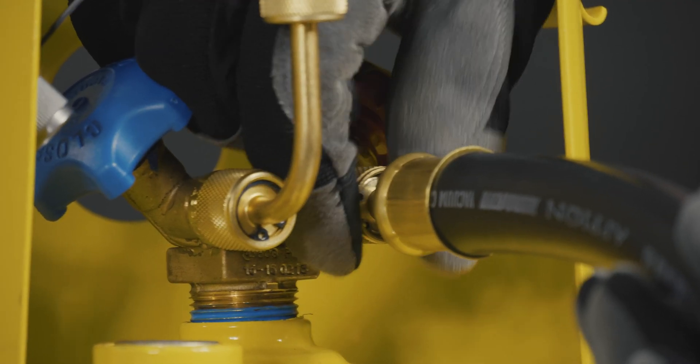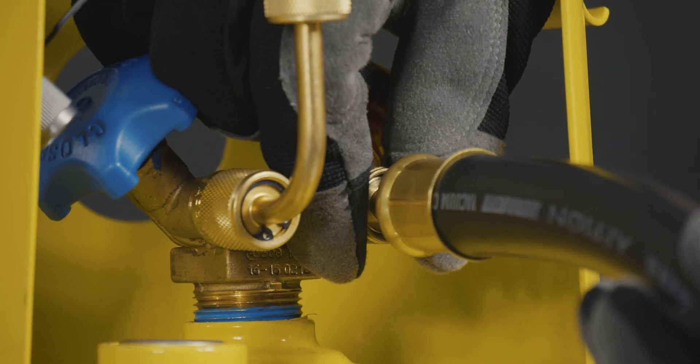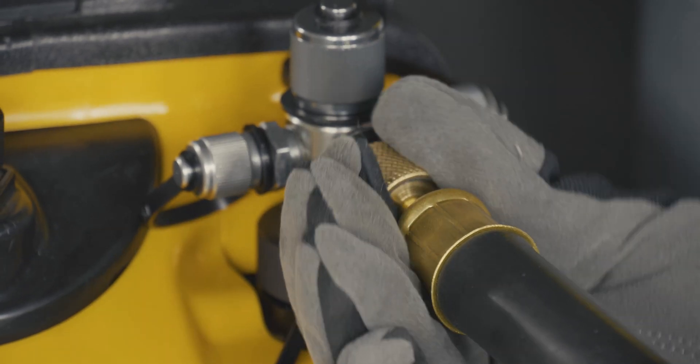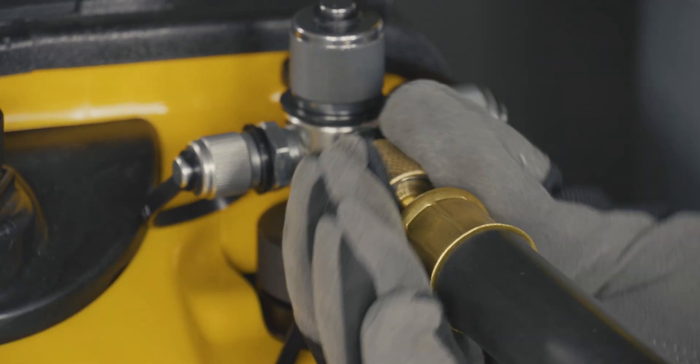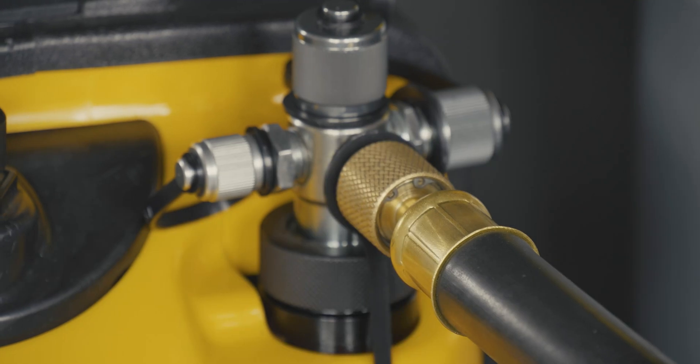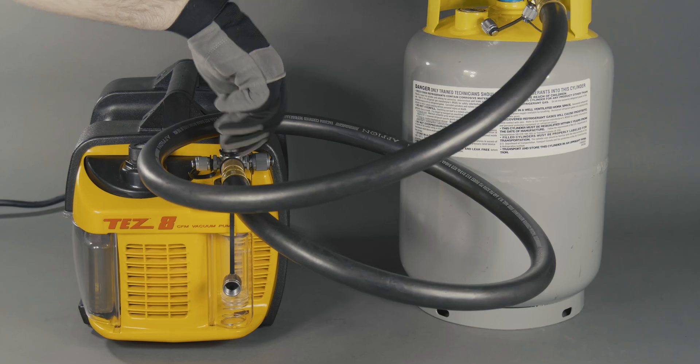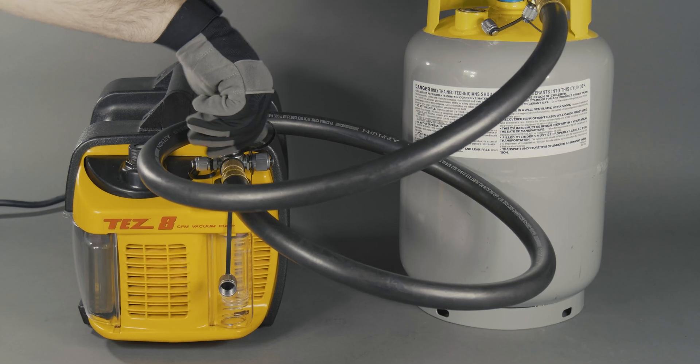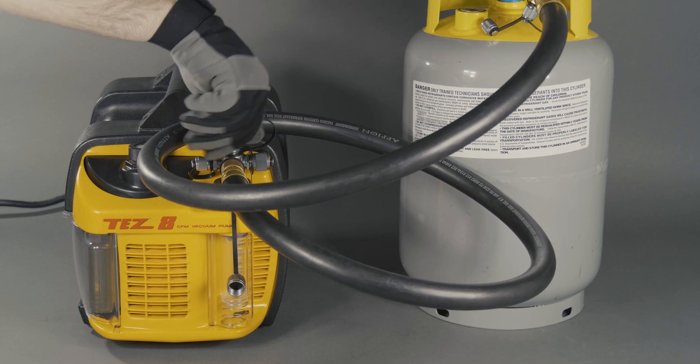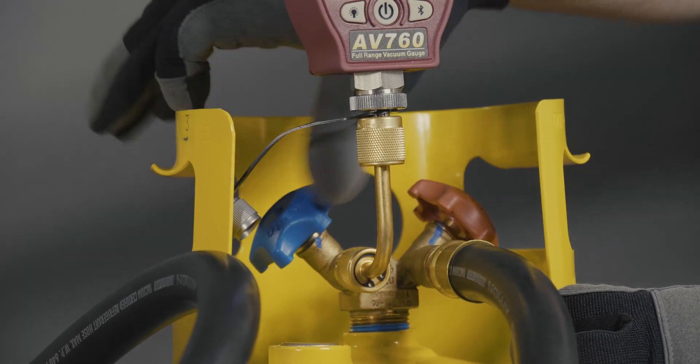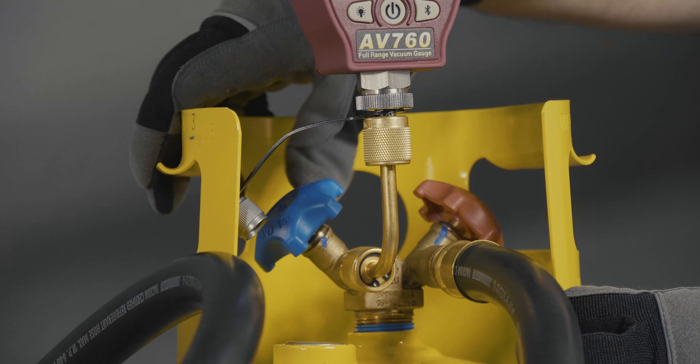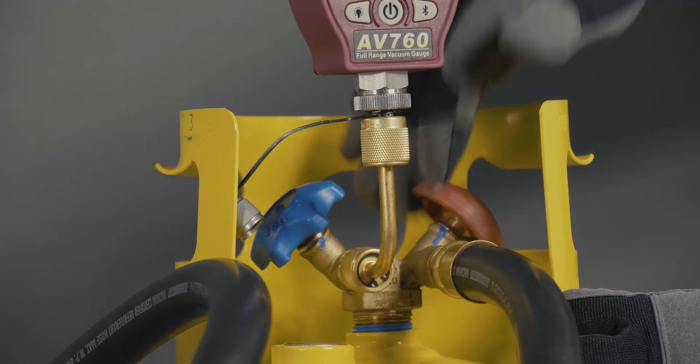Then attach a known good vacuum hose to the vapor port. Attach the other end of the hose to a vacuum pump. Before starting the pump, remove one of the caps. Next, open the valves on the cylinder to ensure the setup is equalized at atmosphere.